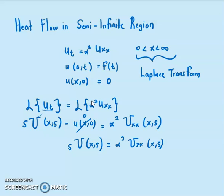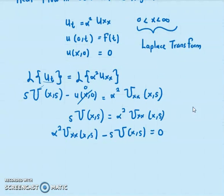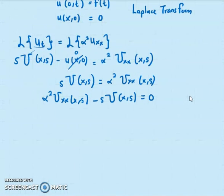This is a second-order equation, so you can use the characteristic approach. Simplifying this equation, I have alpha squared·U_xx minus s·U(x,s) equals 0, which rearranges to U_xx minus (s/alpha²)·U(x,s) equals 0.